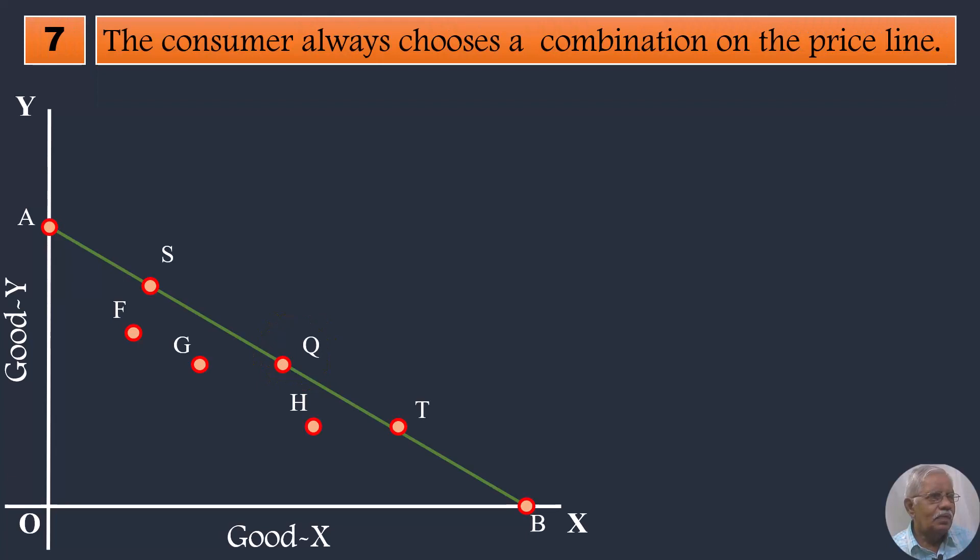The consumer always chooses a combination on the price line. It means he prefers a combination that contains larger quantities of both the goods. Any combination inside the triangle contains smaller quantity of at least one good when compared with a combination on the price line. For example, take combinations Q and G. Q is on the price line. G is inside the price line. Q contains 5 units of good X and 4 units of good Y. G contains 3 units of good X and the same quantity of good Y. Q contains larger quantity of at least one good, so the consumer will not choose any combination that lies within the triangle.